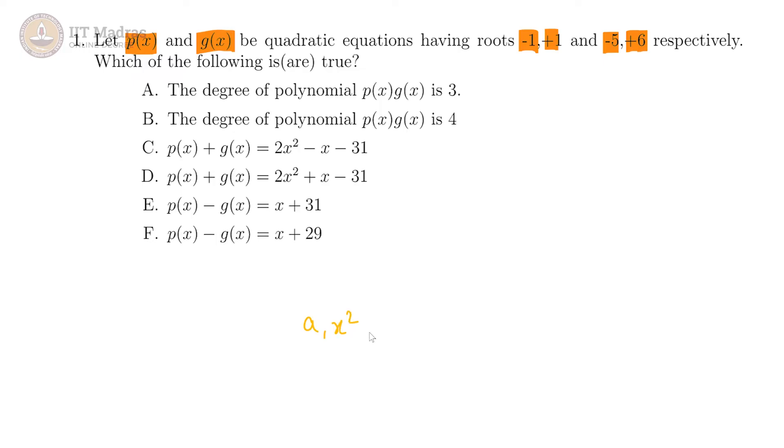So a₁x² plus b₁x plus c₁ into a₂x² plus b₂x plus c₂. When you multiply these, this term and this term will have to be multiplied and you are going to get a₁a₂x⁴. So the degree has to be 4, which is this.